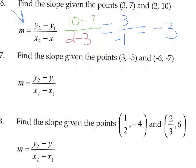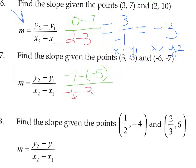Find the slope given the next two points. Label them X1, Y1, X2, Y2. Y2 minus Y1 is negative 7 minus negative 5 — be careful with the negatives. X2 minus X1 is negative 6 minus 3. Simplifying: negative 7 minus negative 5 becomes negative 7 plus 5, which is negative 2. Negative 6 minus 3 is negative 9. The negatives cancel, giving a slope of positive two ninths.